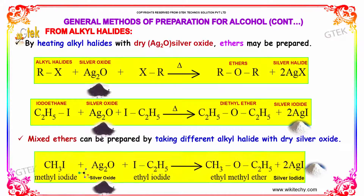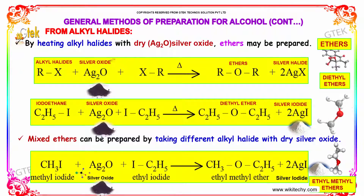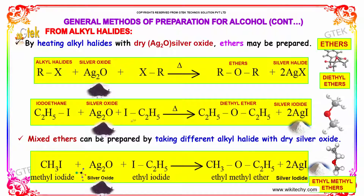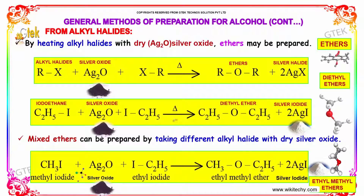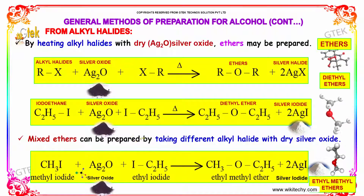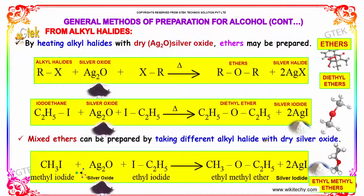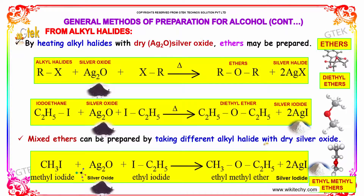Preparation from alkyl halides with dry Ag₂O (silver oxide): ethers may be prepared by heating alkyl halides with dry silver oxide. Iodoethane heated with Ag₂O gives diethyl ether plus silver iodide. Mixed ethers can also be prepared by taking different alkyl halides with dry silver oxide — for example, methyl iodide plus silver oxide plus ethyl iodide gives ethyl methyl ether and silver iodide.